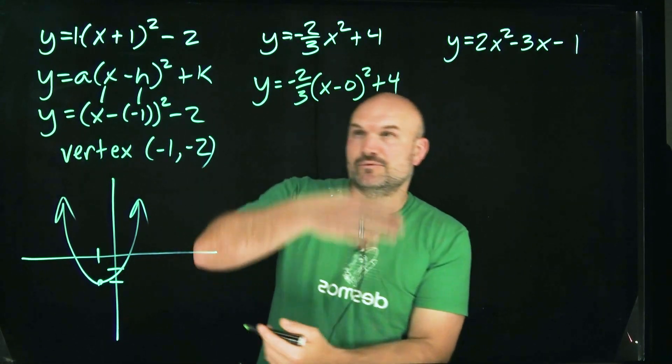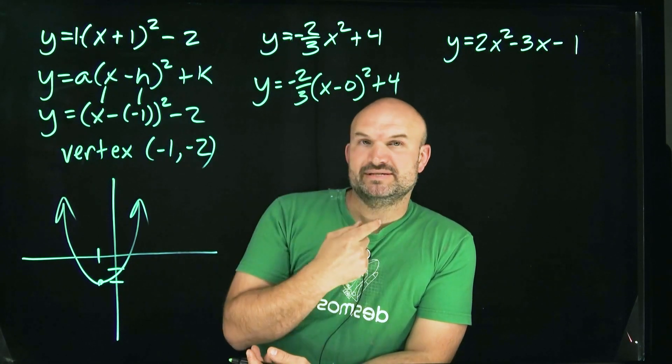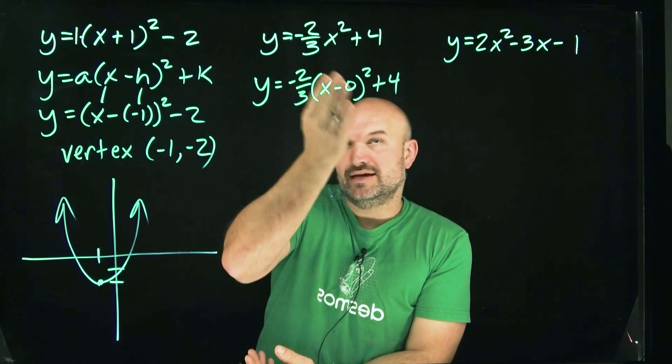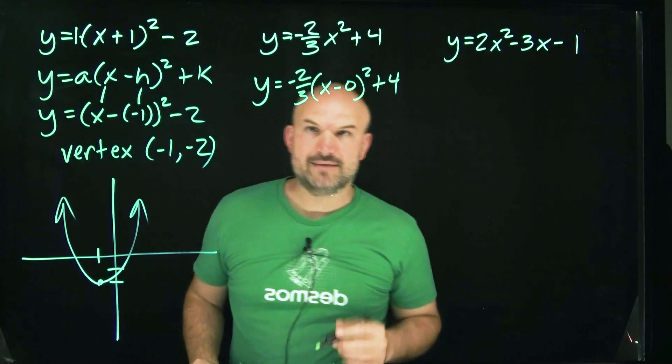Right? Because technically, when we look at this graph, the x-coordinate of the vertex is going to be zero. Because once you agree, x minus zero is just x, and therefore it would be squared. So therefore, the vertex here is going to be zero comma four.